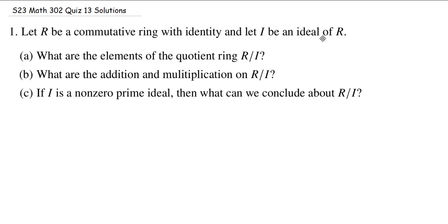First question is: what are the elements of the quotient ring R modulo I? This is one of those questions where if you know it, it's going to be very simple. If not, well, you don't have much hope. R modulo I consists of all translations of I by some element in R.